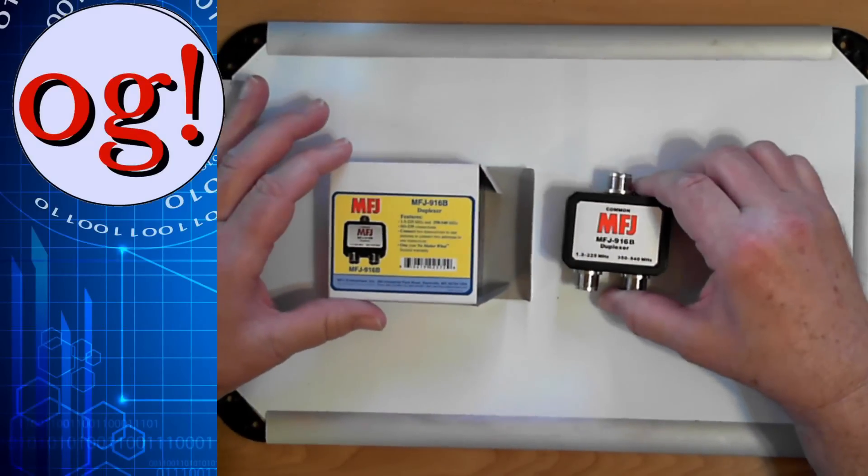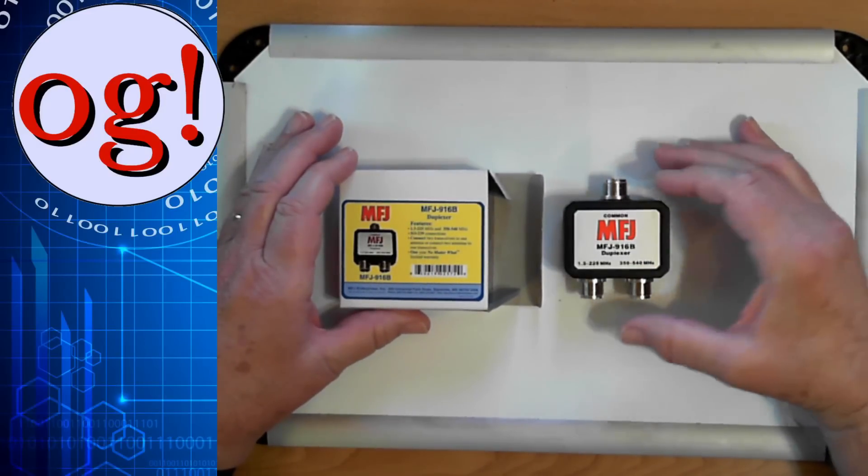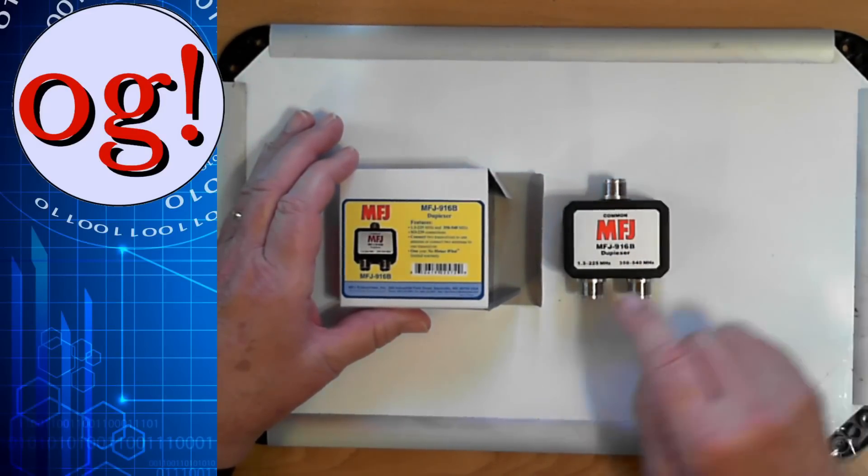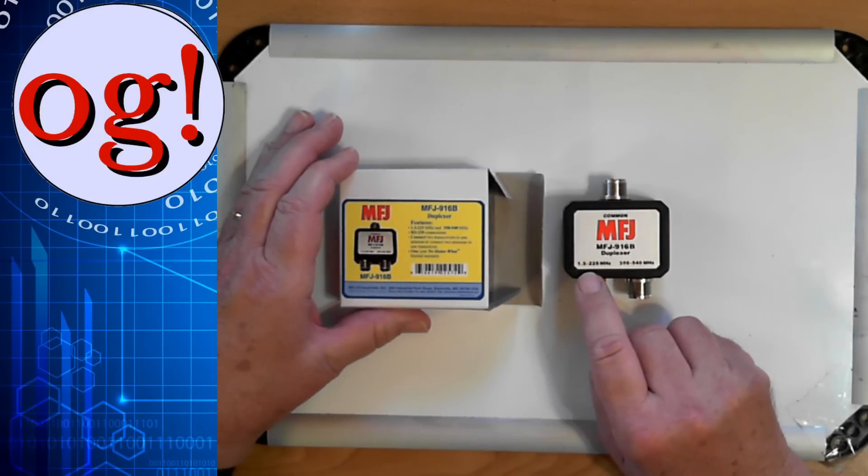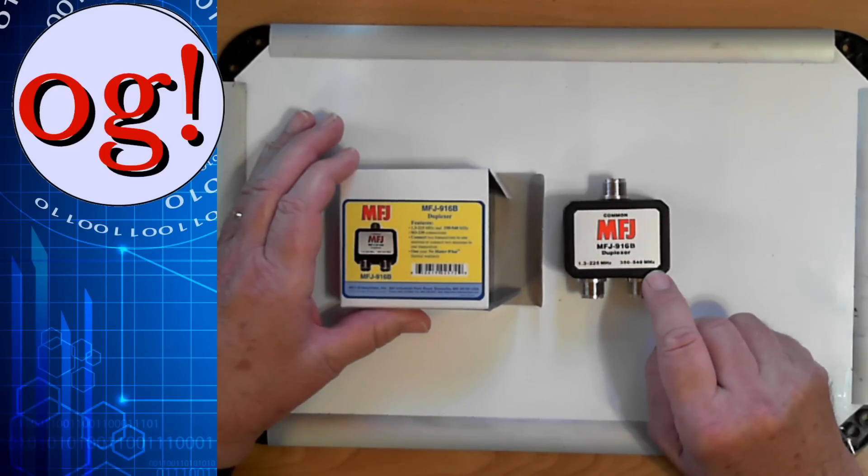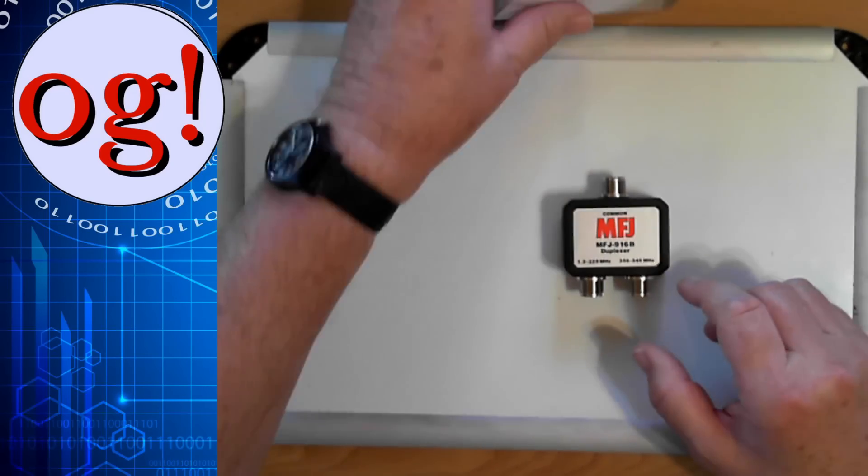This is the little device right here. The common port goes here. This 1.3 megahertz to 225 megahertz goes here, and 350 to 540, in other words, the 70 centimeter ham band goes here. Now let me tell you what this thing is for.